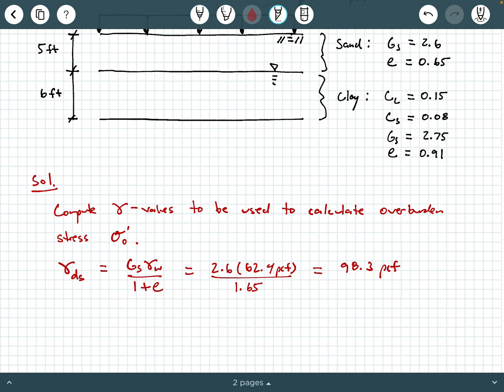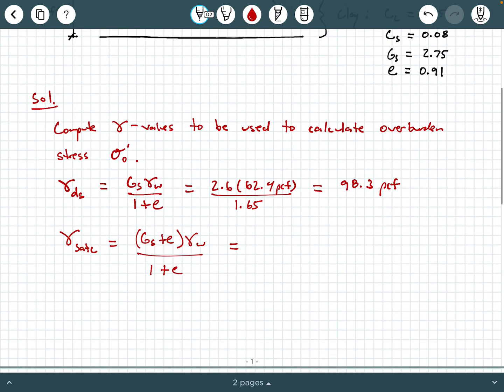Next, we can calculate the saturated unit weight of the clay. Again, notice the water table here at the clay-sand interface, which indicates that the clay is fully saturated. So we're going to say gamma sat sub C for clay. And that formula from our phase relation knowledge is G sub S plus E times the unit weight of water divided by 1 plus E for the clay layer. So we're going to write that as 2.75 plus 0.91 times 62.4 PCF, all divided by 1.91. And so evaluating this, we get 119.6 PCF as the saturated unit weight of the clay.